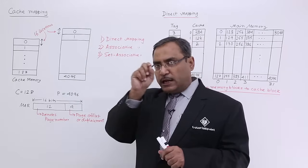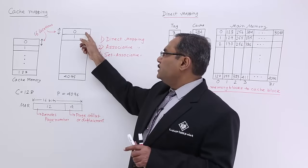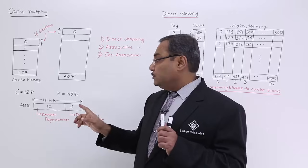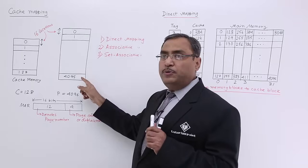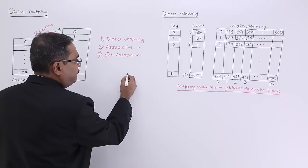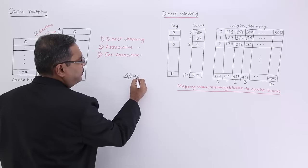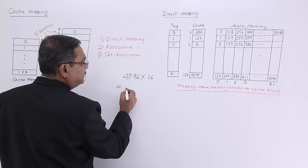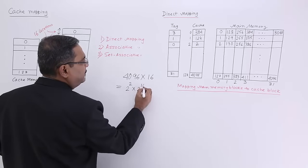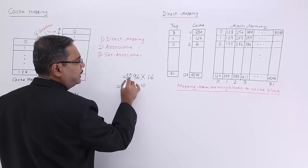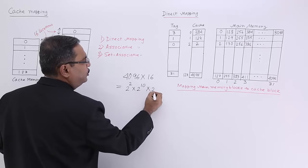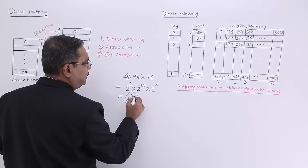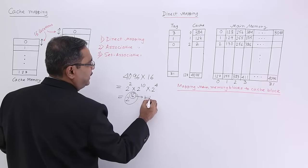Each and every page has a certain number of locations. Here I have considered 16 locations per page. So how much memory do we have? We have 4096 pages, each with 16 locations. 4096 is 2 to the power of 12, and 16 is 2 to the power of 4, so multiplying gives 2 to the power of 16. This means we have a 16-bit address.